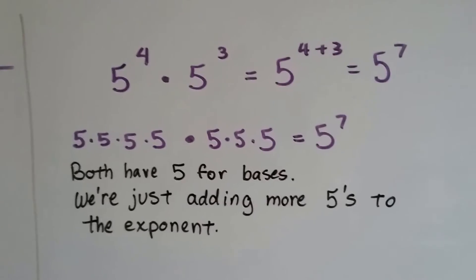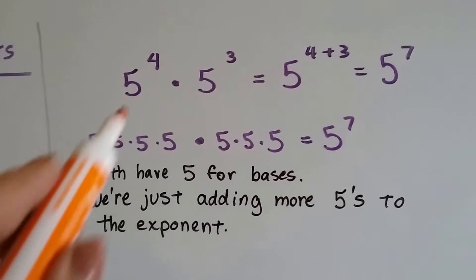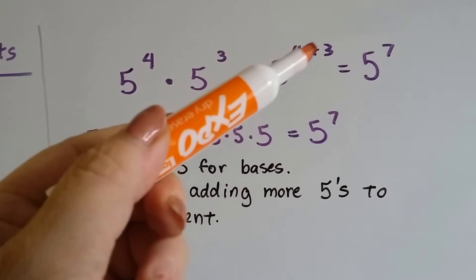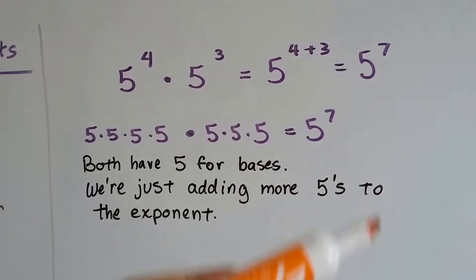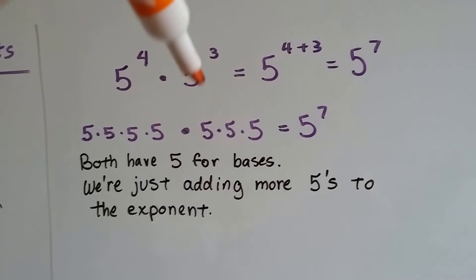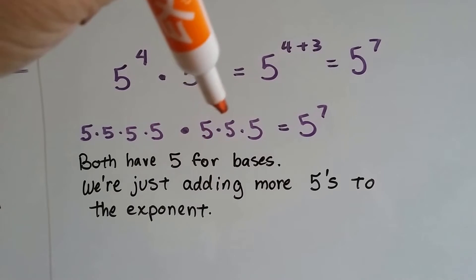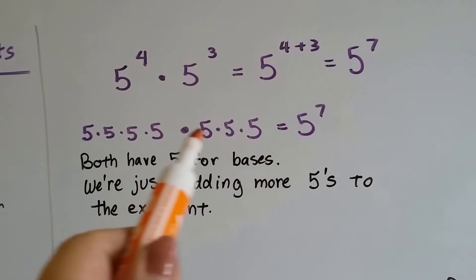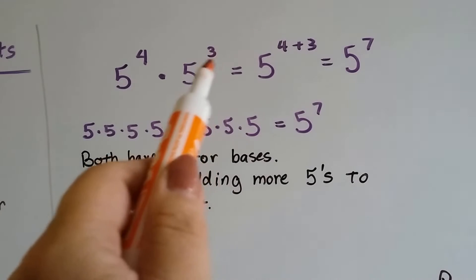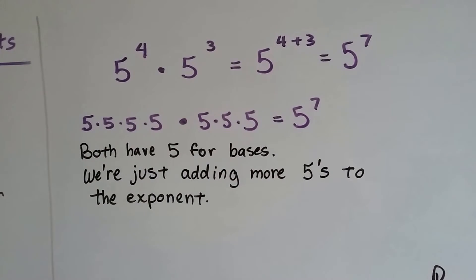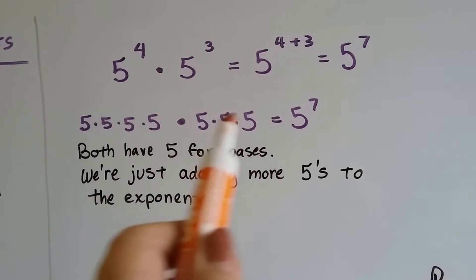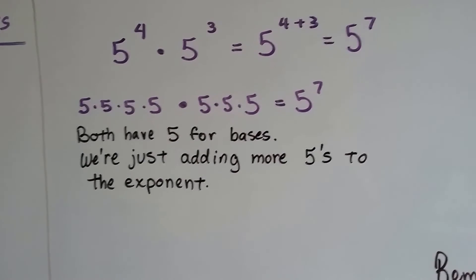Take a look at this one: we've got 5 to the fourth power and 5 to the third power. Because the bases are both 5, basically all it means is 5 to the 4 plus 3 power, so it's 5 to the seventh power. If we've got 5 to the fourth, which is 5 times 5 times 5 times 5, and 5 to the third power, which is 5 times 5 times 5 — these are all times each other. So now it's 5 to the seventh because we've got seven 5's here.